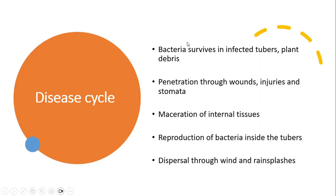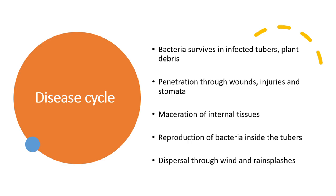What is the disease cycle? Bacteria survive in infected tubers and plant debris. During the season, penetration through wounds, injuries, and stomata can take place. Maceration of internal tissues of the tubers and reproduction of bacteria inside the tubers occurs. Dispersal through wind and rain splashes results in the spread of bacteria to other plants.